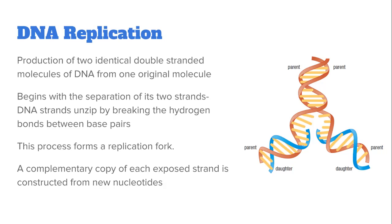DNA replication is the production of two identical double-stranded molecules of DNA from one parent molecule. The process begins with the DNA double helix separating its two strands to become two individual parent strands — the DNA strands unzip. We call this separation the unzipping process, and this happens because the hydrogen bonds between the base pairs are being broken.